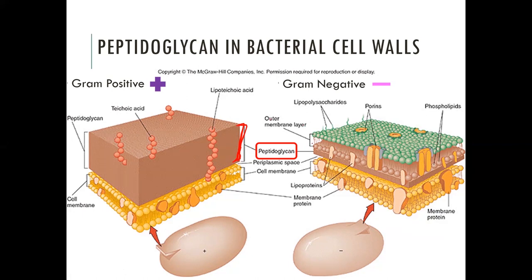Gram-negative bacteria are a little different. They also have a plasma membrane surrounding the cell, but outside of that, the layer of peptidoglycan is very thin — it's still made of peptidoglycan, just a very thin layer. In addition, gram-negative bacteria have a second membrane surrounding the cell. So gram-positive has a thick peptidoglycan layer with no extra membrane, while gram-negative has a thin peptidoglycan layer with an extra outer membrane surrounding it.